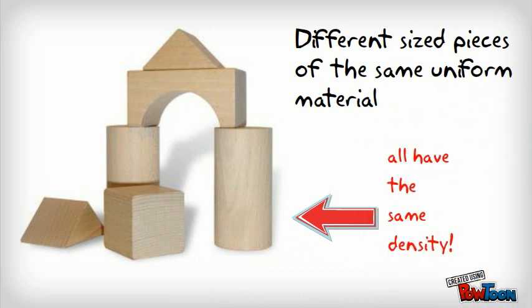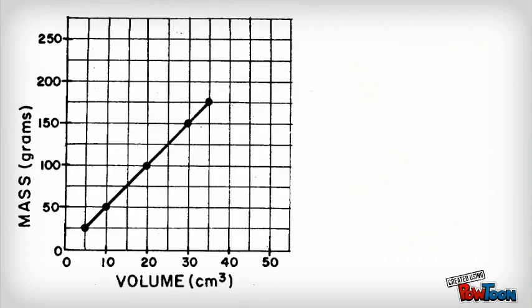If we were to plot their mass and volume on a graph, it would look like this. You'll notice that the five points represent the five different pieces of the material.